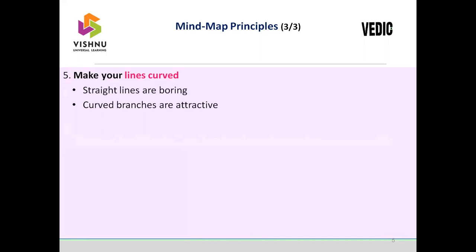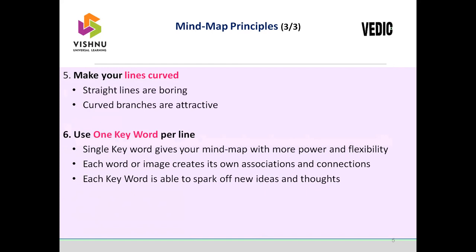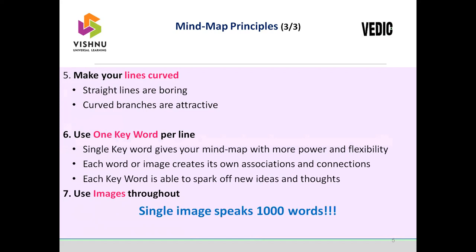Make more lines curves — straight lines are boring, curved branches are attractive. Use one keyword per line; a single keyword gives your mind map more power and flexibility. Each word or image creates its own associations and connections, and each keyword is able to spark off new ideas and thoughts. Use images throughout as much as possible. A single image speaks a thousand words — more images give more connection, more association, and more imagination.